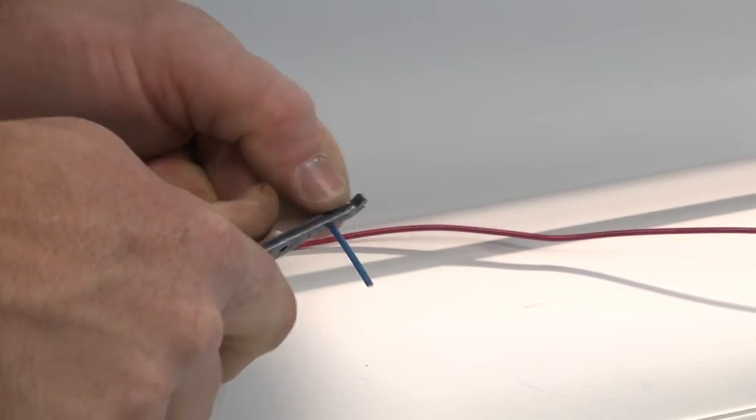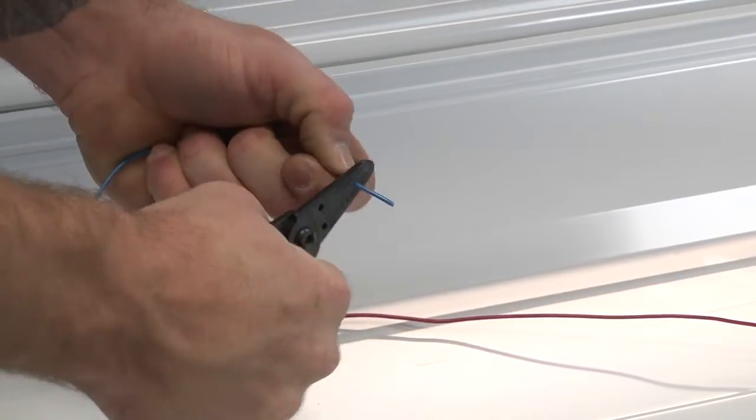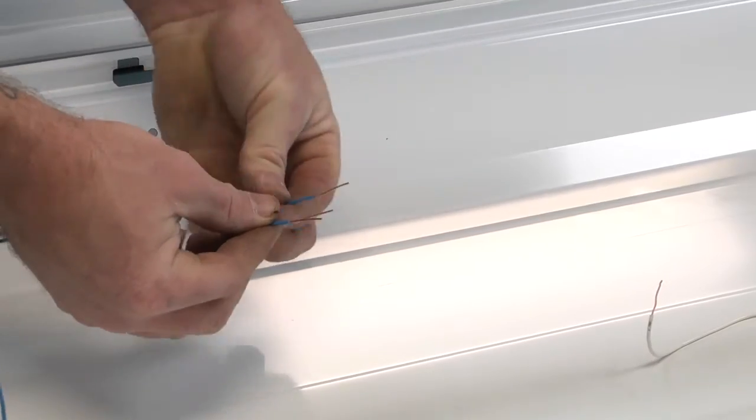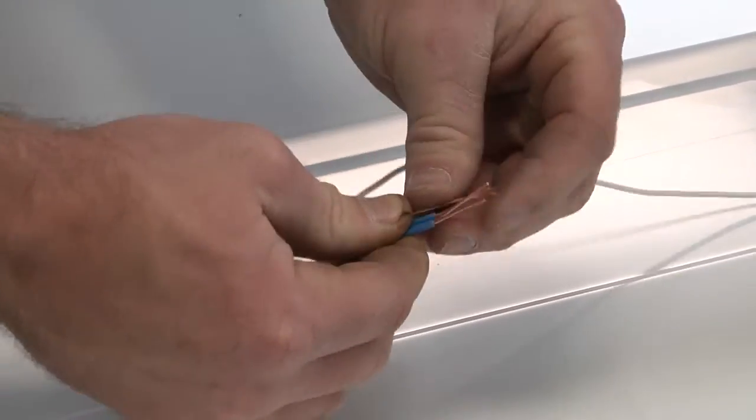Strip your socket lead wire so that a half inch is exposed. Connect all your socket lead neutral wires to your main source neutral wire and secure it with a wire nut.